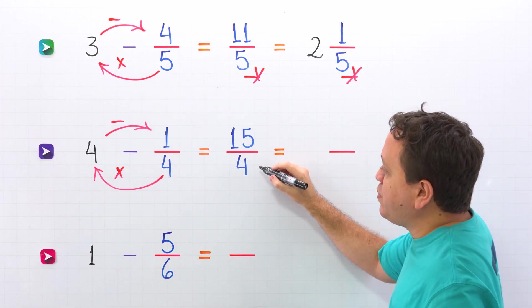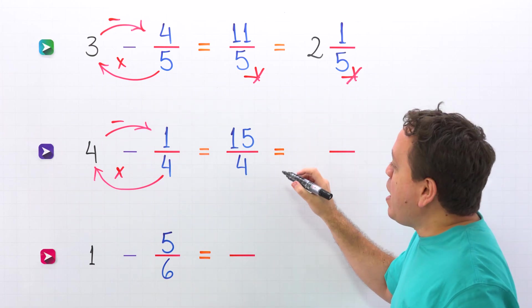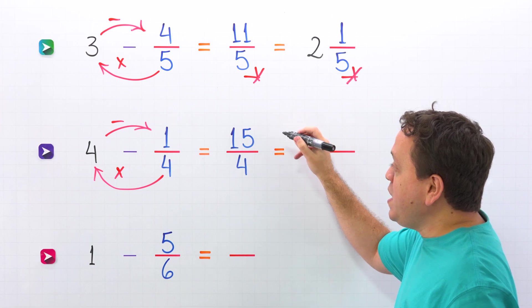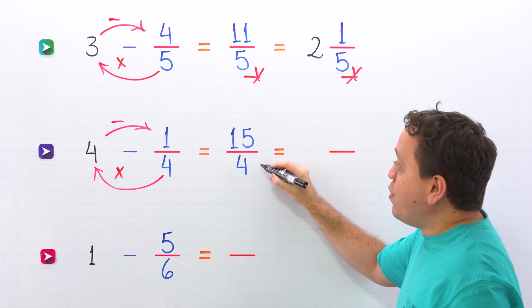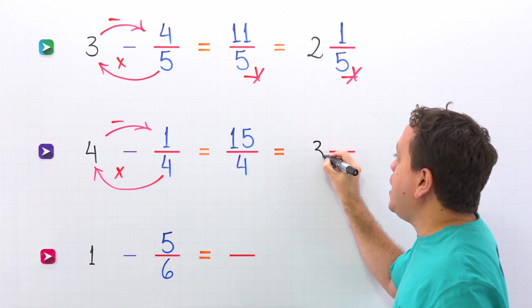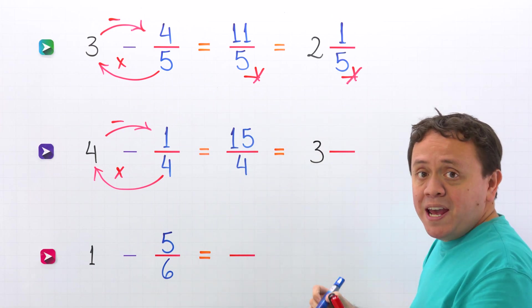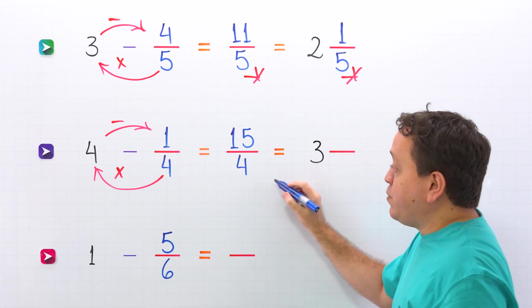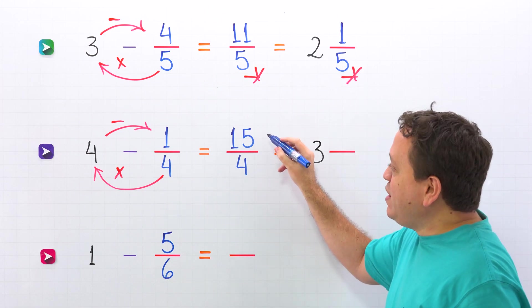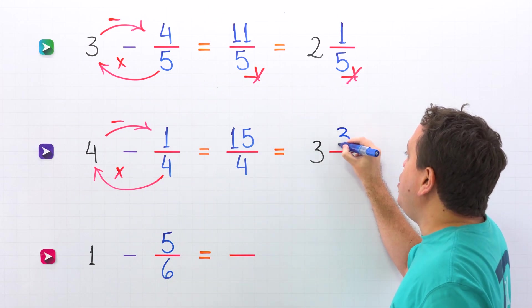How many times does 4 go into 15? Well, 4 goes into 15 three times. And then we multiply: 3 times 4 is 12. To get 15, we need to add 3.